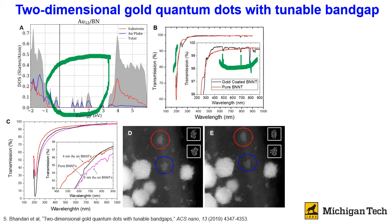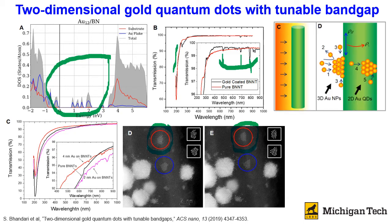We also found that the shape and the number of gold atoms per quantum dot can be tuned by irradiation of electron beam inside the transmission electron microscope. If you are interested in the growth mechanism of these 2D gold quantum dots, please refer to the published work referenced here.